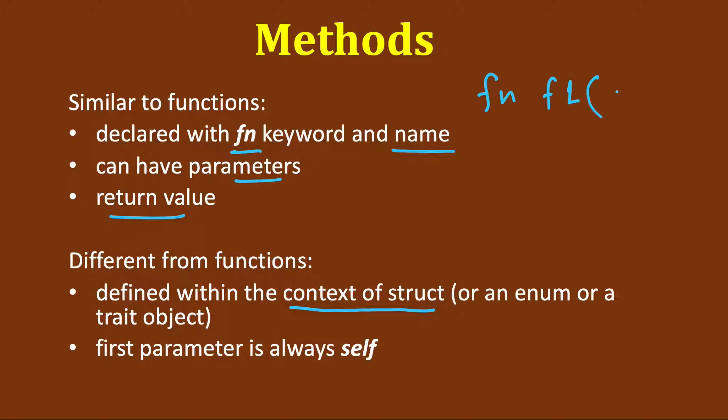You can keep one of its arguments as a struct or some general argument, but these methods are always defined within the context of a struct or an enum or a trait object, which we will see later.